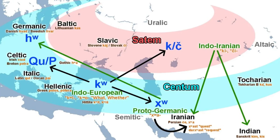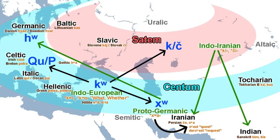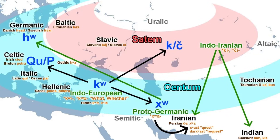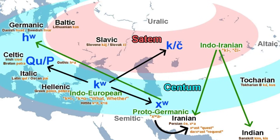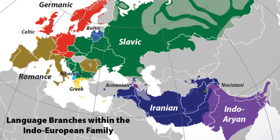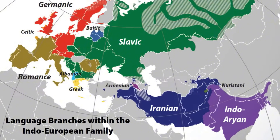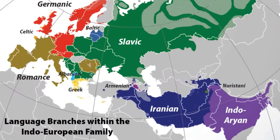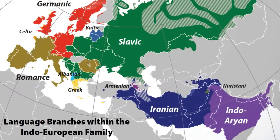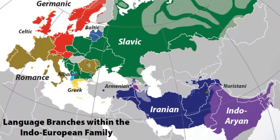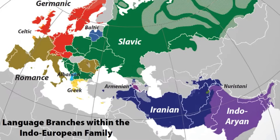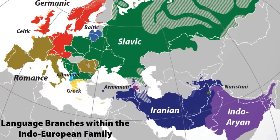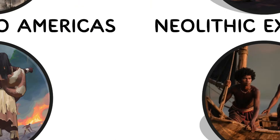Archaeological and genetic evidence shows that this spread significantly reshaped population structures across Eurasia. The Indo-European Spread is important because it helps explain shared linguistic roots, mythologies, and cultural patterns across distant regions, linking societies from Ireland to India through a common ancestral heritage.